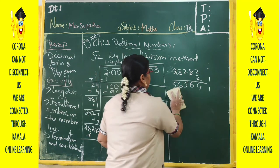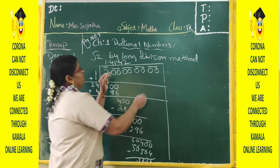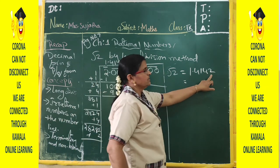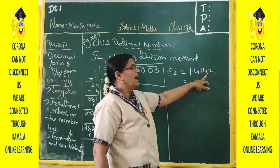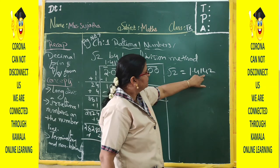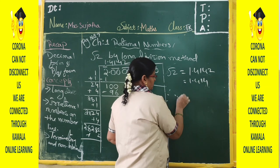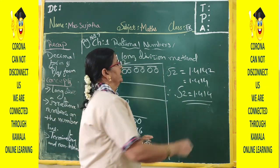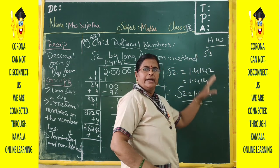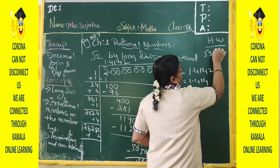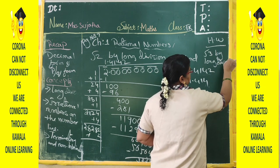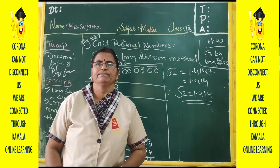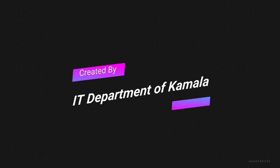The question asks for 3 decimal places, so we computed up to 4 decimals and got 1.4142. Since the 4th decimal place is 2, which is less than 5, we do not round up. Therefore, root 2 equals approximately 1.414. Homework: find the value of root 3 up to 3 decimal places using the long division method.